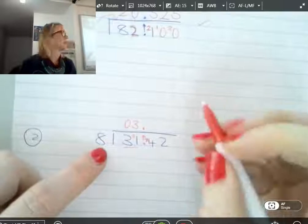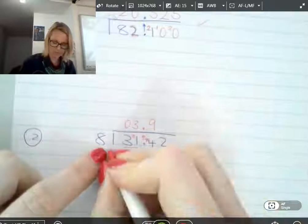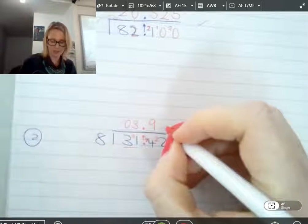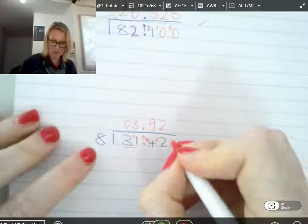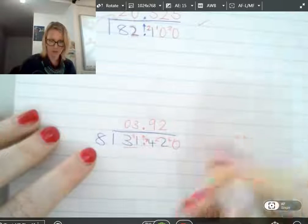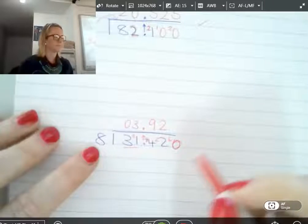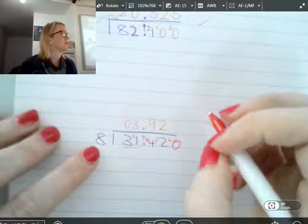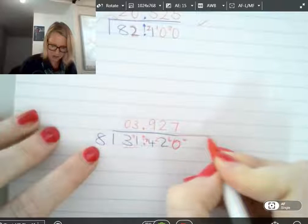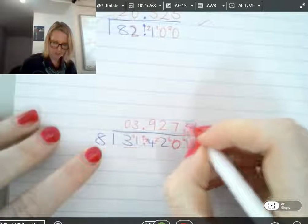Excellent. So 8 into 74. 9 times. What is 8 times 9? 72. Excellent. 9 times how many left over then? 2. Fantastic. 8 into 22. Twice. Twice gets me to 16. So how many do I have left over, Baxter? 6. And what do I do now? Add a 0. Fantastic. 8 into 60. 7 times. What is 7 8s? 56. So I've got 4 left over. And if you need to just extend this out, you can do that. Put my 0 down. 8 into 40. 5 times exactly. Fantastic.